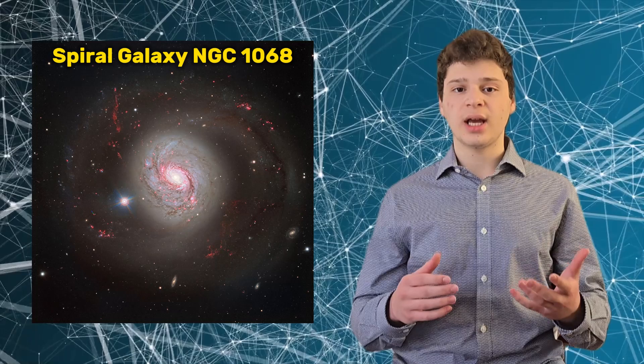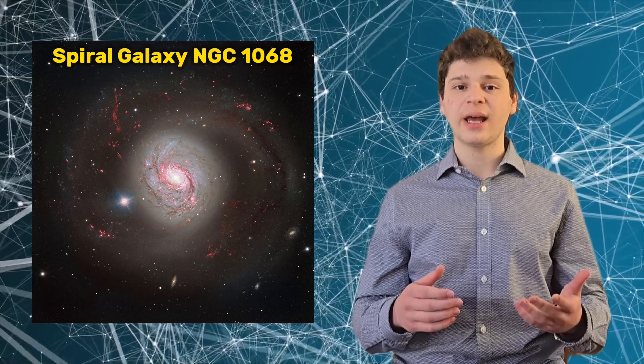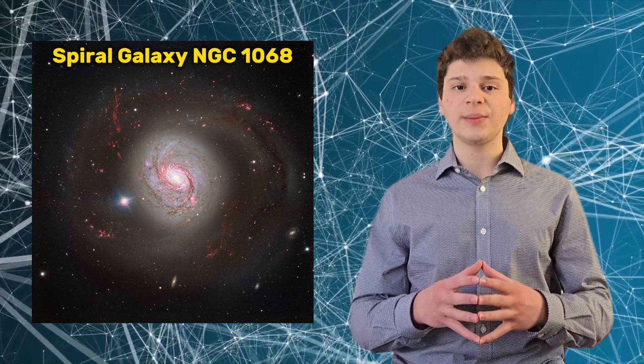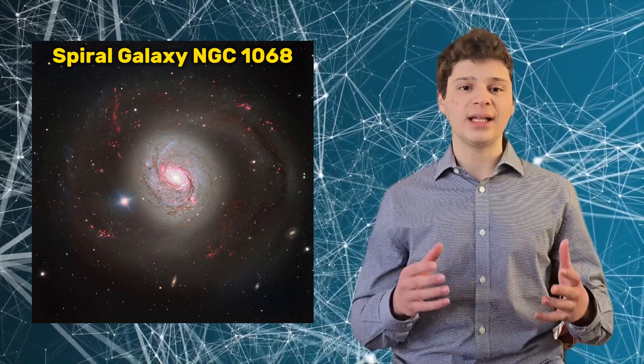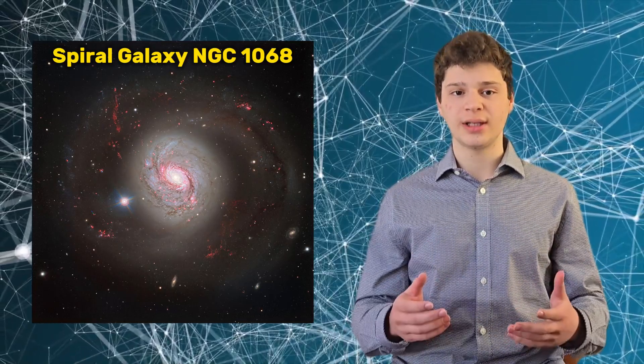For example, the AGN in galaxy NGC 1068, one of our cosmic neighbors, is considered highly active because of its intensely bright accretion disk.